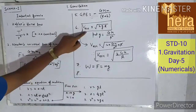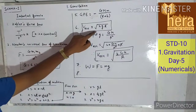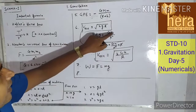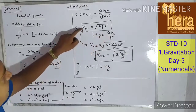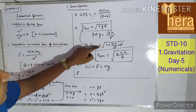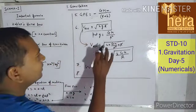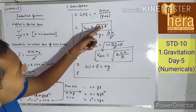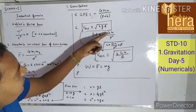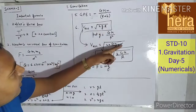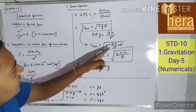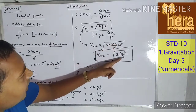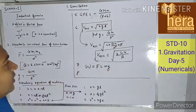Escape velocity: v_escape = √(2gR). If you substitute g = GM/R², this becomes v_escape = √(2GM/R). It depends on the question whether to use v_escape = √(2gR) or v_escape = √(2GM/R).